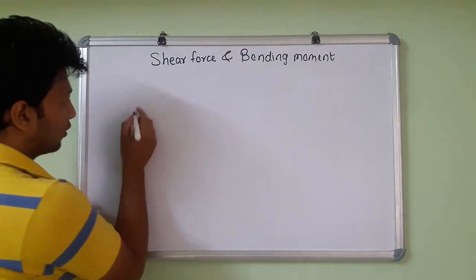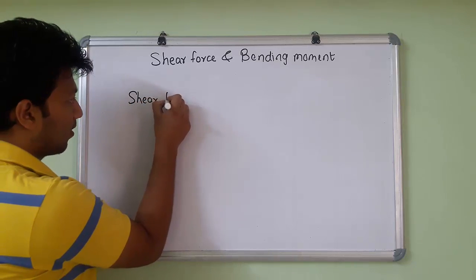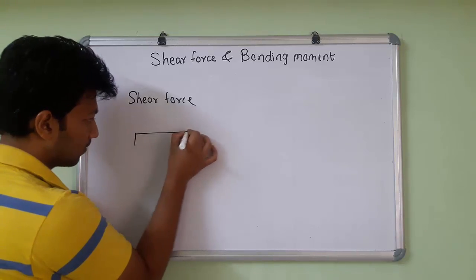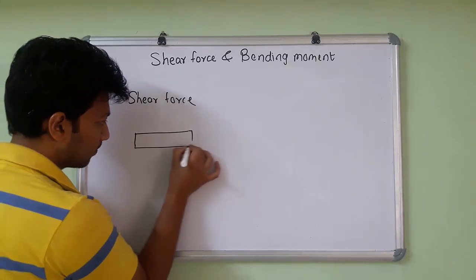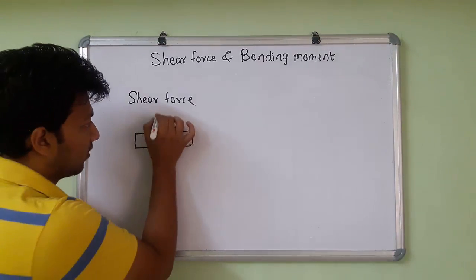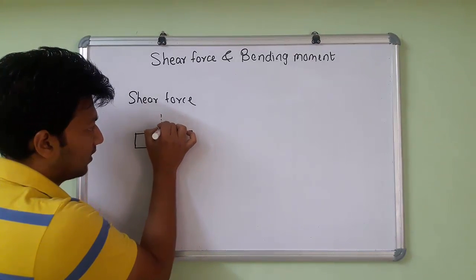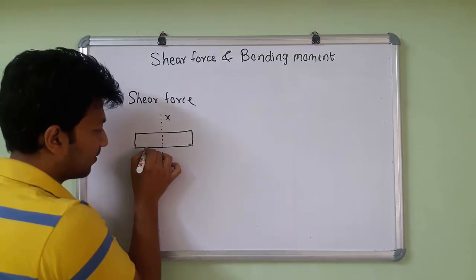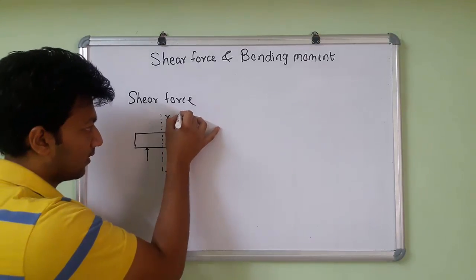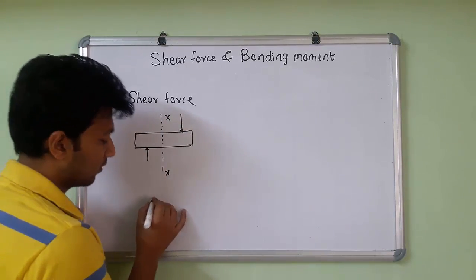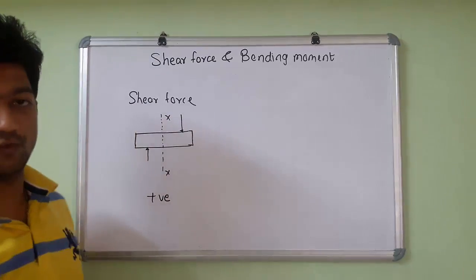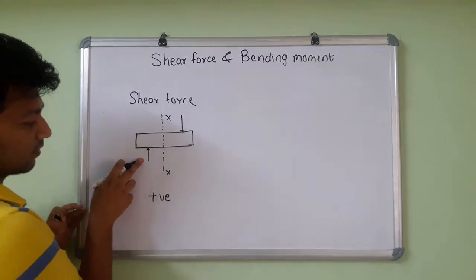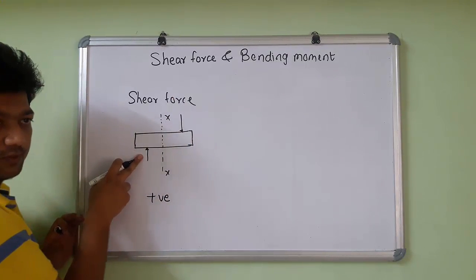Sign convention for the shear force. Consider this is the beam. To find the shear force, we take a section here. If in the left section there is an upward force and in the right section there is a downward force, we consider this as positive shear force. If we consider this section and look only at this portion, that will give us positive if upward.